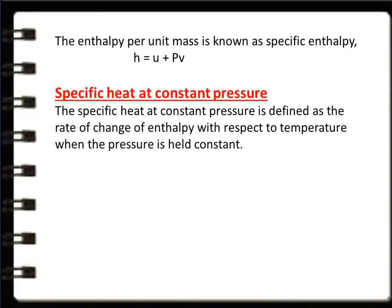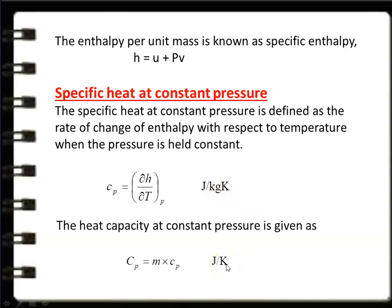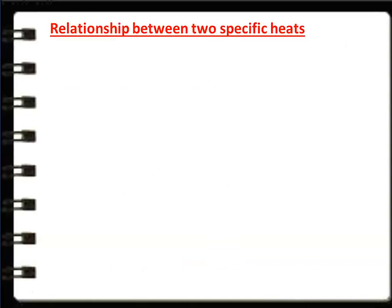The specific heat at constant pressure Cp is defined as the rate of change of enthalpy with respect to temperature when pressure is held constant: Cp = ∂h/∂T at constant pressure, in J/(kg·K). Heat capacity at constant pressure is Cp = m × cp, in J/K. For liquid and solid, there is only one specific heat. For gaseous substances, there are two specific heats: Cv and Cp.